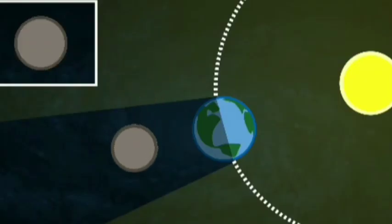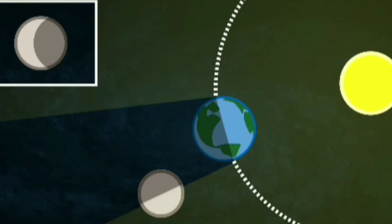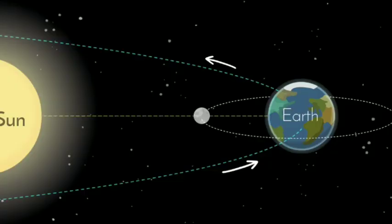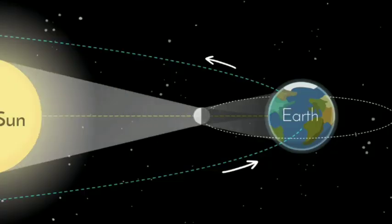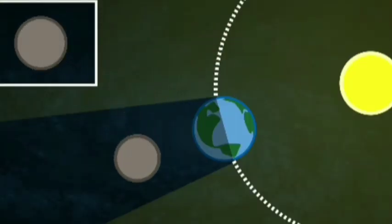We've only ever seen a curved edge come in front of the sun. And the only shape that has a curved edge no matter its orientation is a sphere.